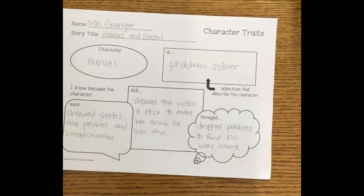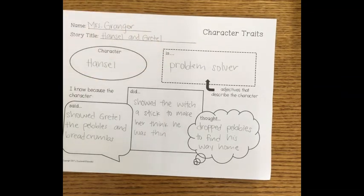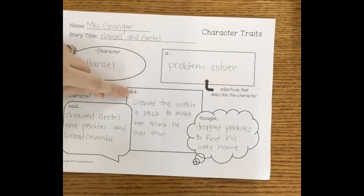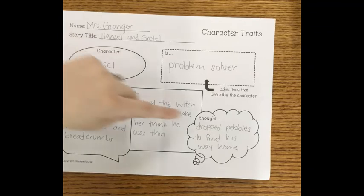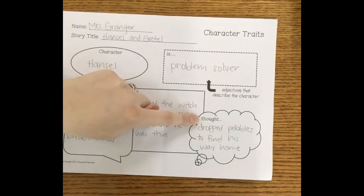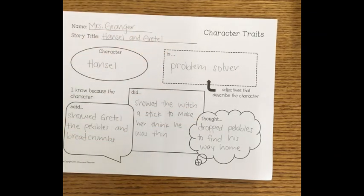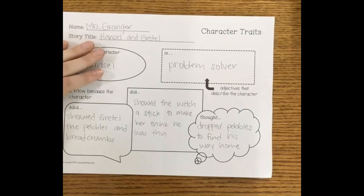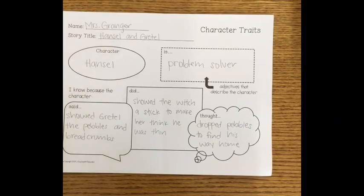All right, second graders, it's your turn. With your character and your character trait, I want you to find three times in the text that the character said something, did something, and thought something that shows us what type of character they are. When you're finished, have your parents take a picture of this and send it to your teacher. Best of luck!